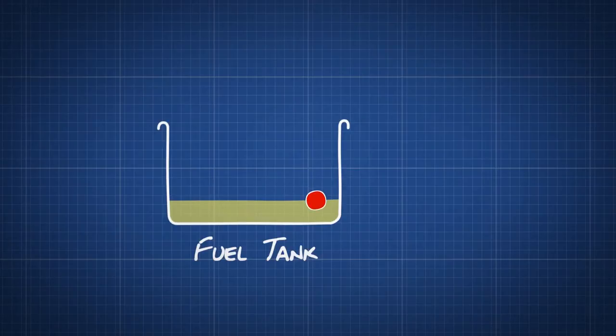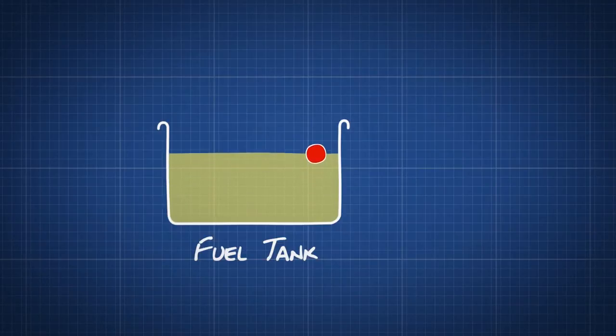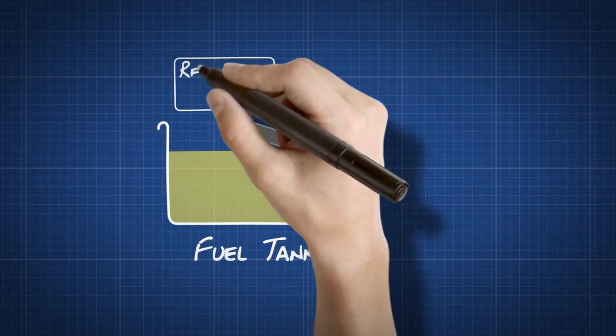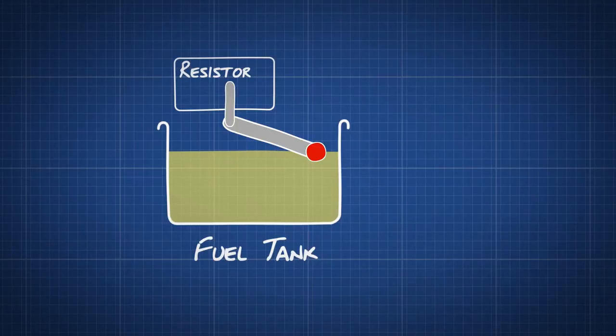A small float sits in your car's fuel tank. The float bobs on top of the fuel. The higher the level, the higher it floats. The float is attached to a thin metal rod that scrapes up against a resistor.